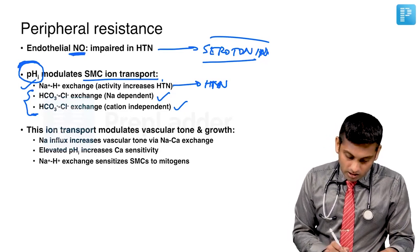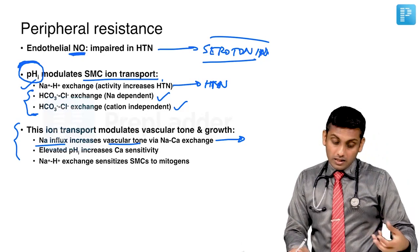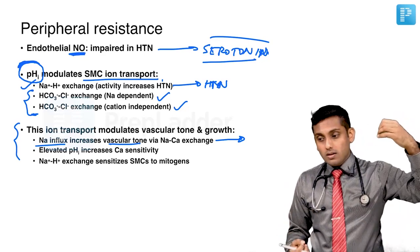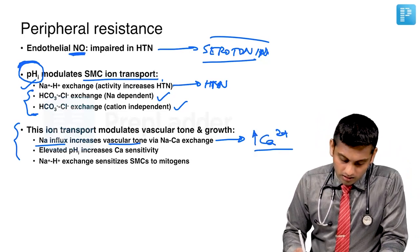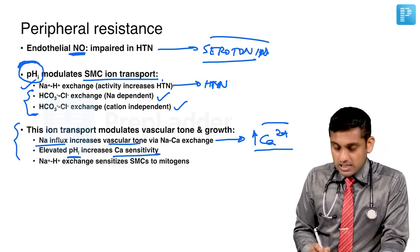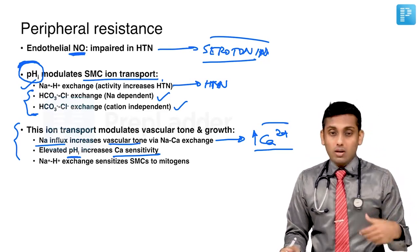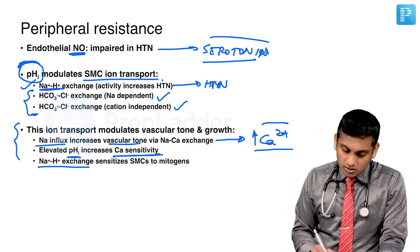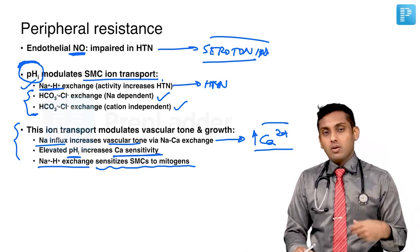The effects of this ion transport are threefold. Sodium influx increases vascular tone because as sodium influxes it encourages calcium to influx as well — similar to action potentials — and when threshold is reached there is influx of calcium from the sarcoplasmic reticulum, and increased calcium load increases contraction and over time increases hypertrophy. Elevated intracellular pH increases calcium sensitivity, meaning even small amounts of calcium increase contraction and the mitogenic character of the muscle wall. Sodium-hydrogen exchange sensitizes smooth muscle cells to mitogens, which are signals to increase mitosis or cell division — in other words, cell growth.